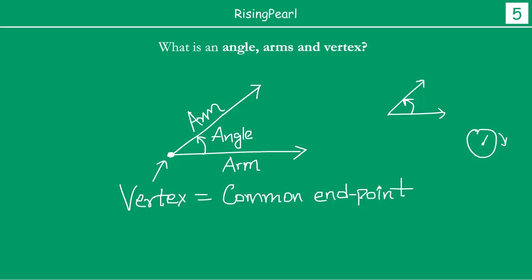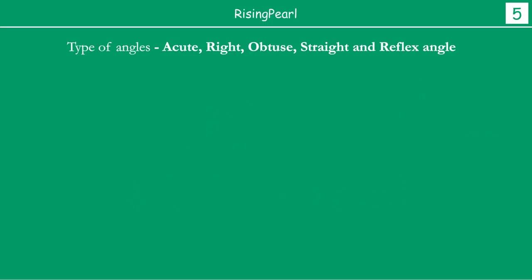Now we are going to talk about different types of angles. We have acute angle, we have right angle, we have obtuse angle, straight angle, and reflex angle. Let's see what each one of them is.